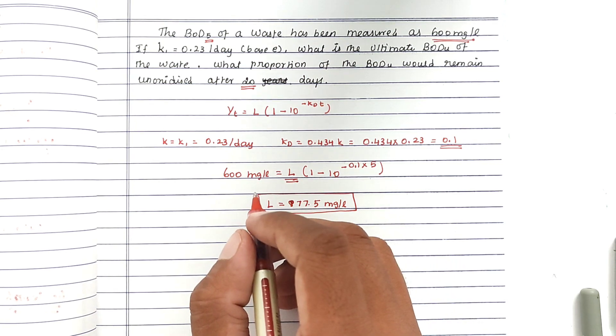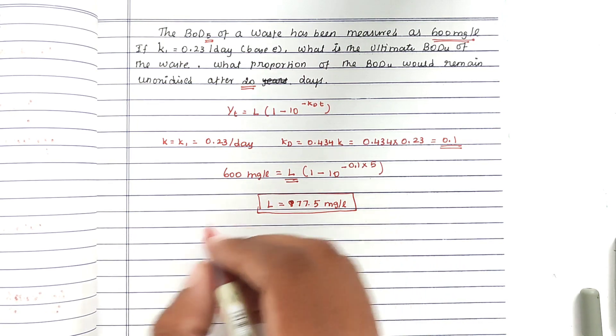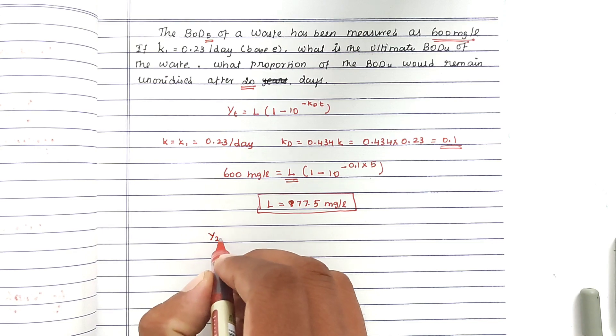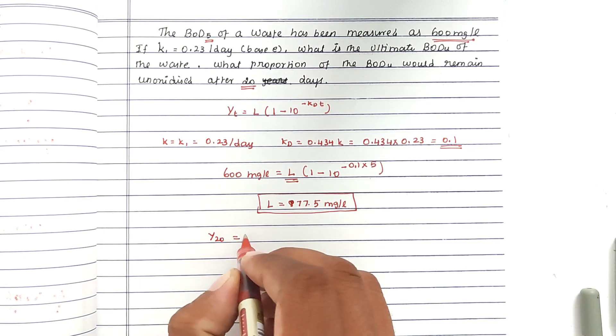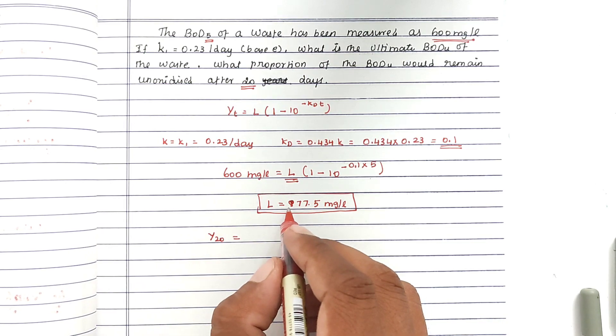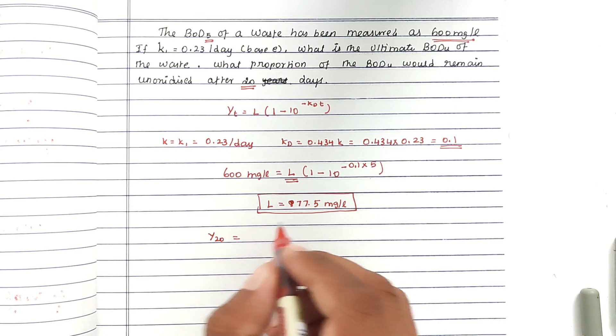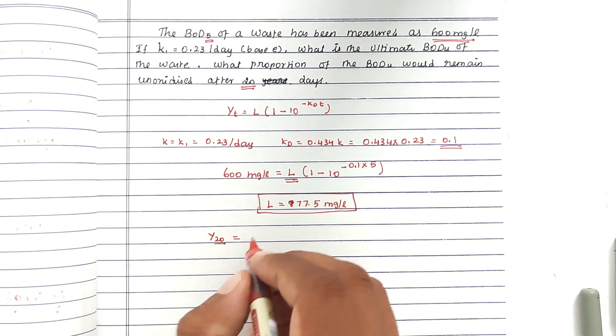Now we have to find out the 20-day BOD. The ultimate BOD is 877, but we have to find out what is the BOD after 20 days.